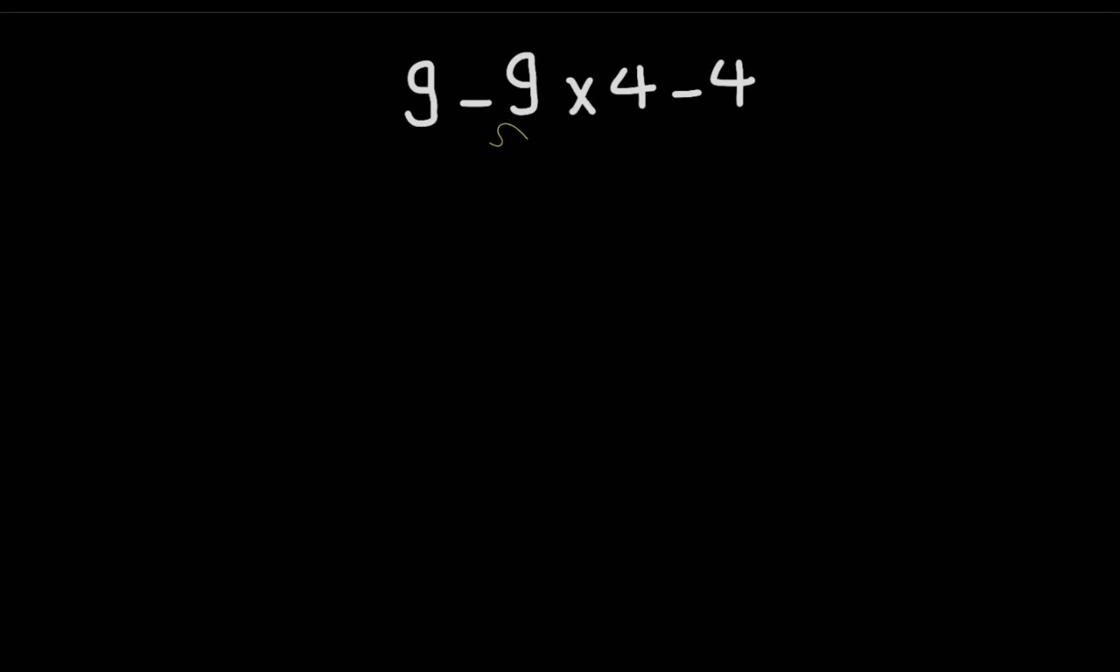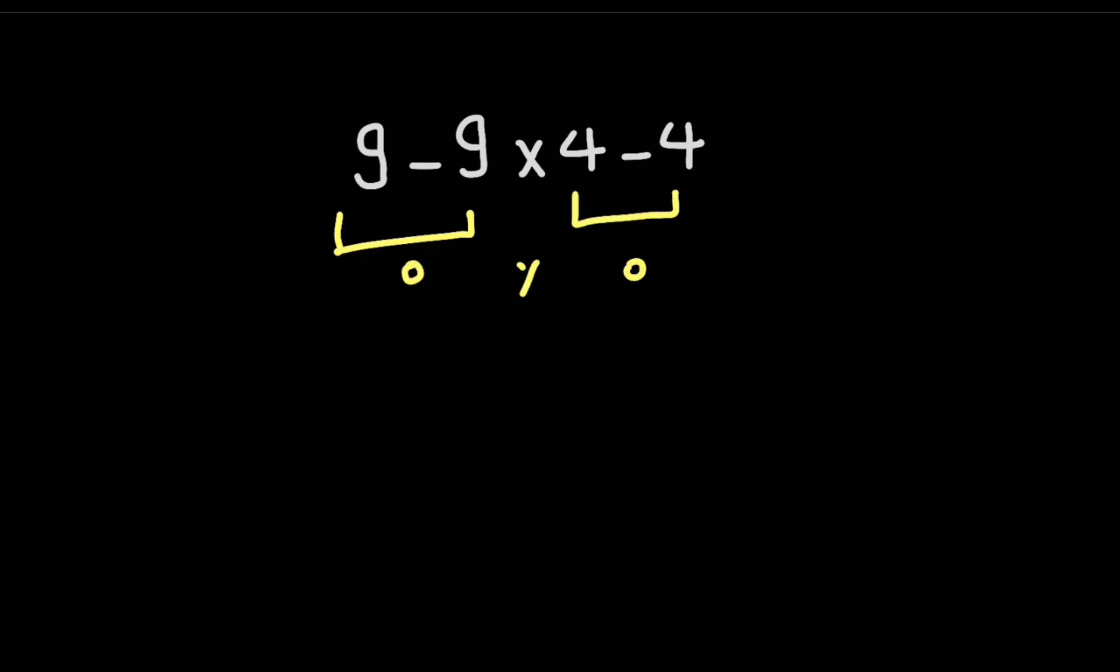Hey guys and welcome to this video. Please subscribe to our channel if you like this video. 9 minus 9 times 4 minus 4. So 9 minus 9 gives us 0, 4 minus 4 gives us 0, and 0 times 0 gives us 0.